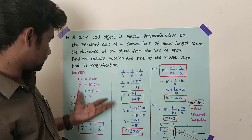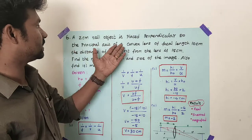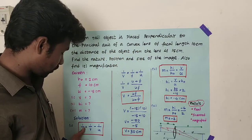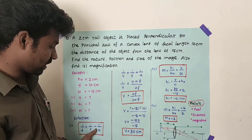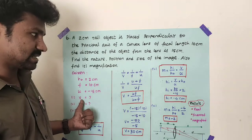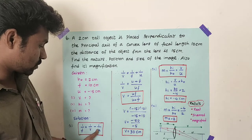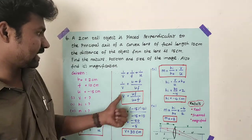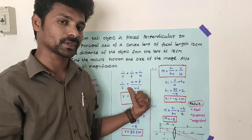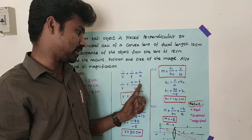Now let's calculate the solution. Since this is a lens concept, we use the lens formula: 1/f = 1/v minus 1/u. We need to find image distance v, so we rearrange: 1/v = 1/f plus 1/u, which after cross multiplication gives 1/v = (u plus f) divided by (u times f).